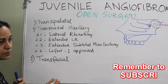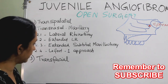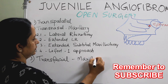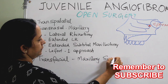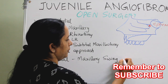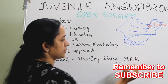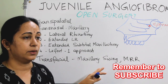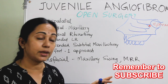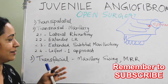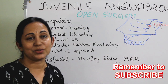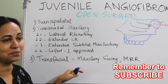Next are transfacial approaches, which mainly include two: maxillary swing, and total maxillary removal and reinsertion. This is purely a postgraduate topic — you have to read and prepare short notes on each. Each topic needs around one hour of detailed discussion, so only the names are being mentioned here.